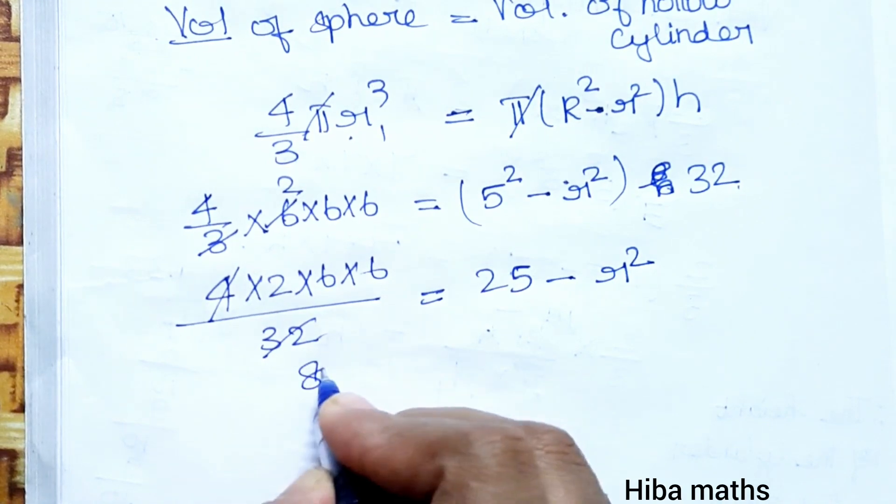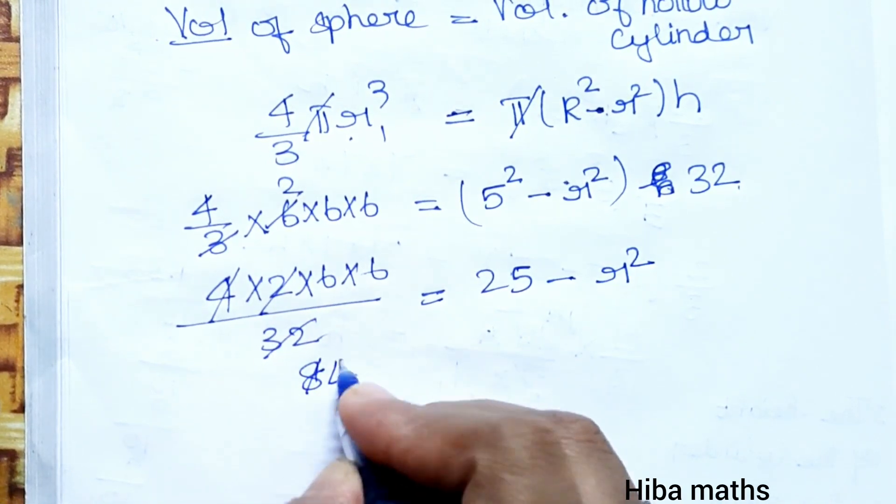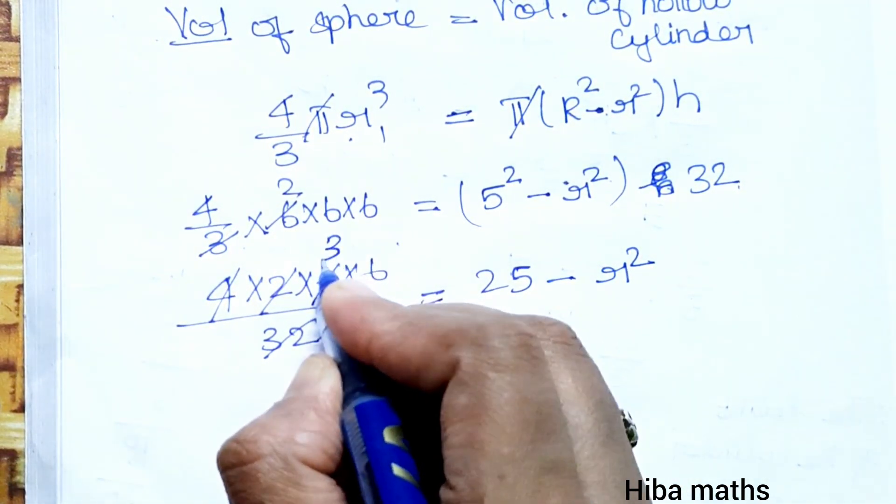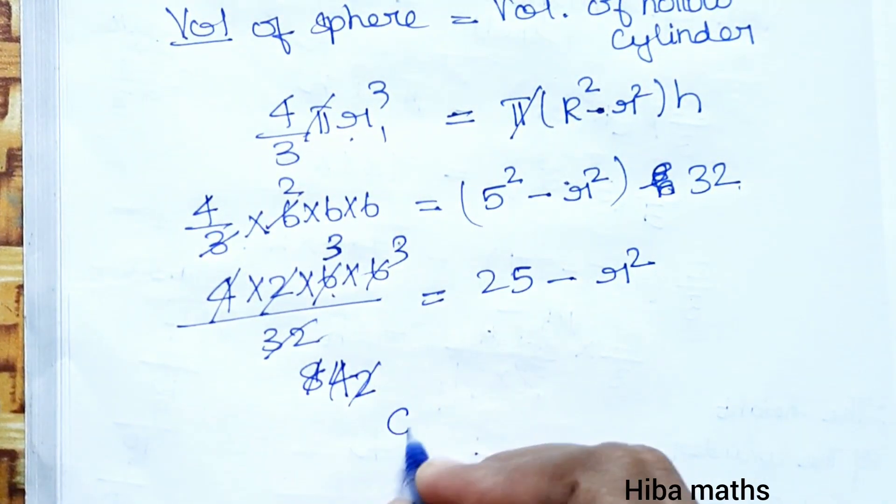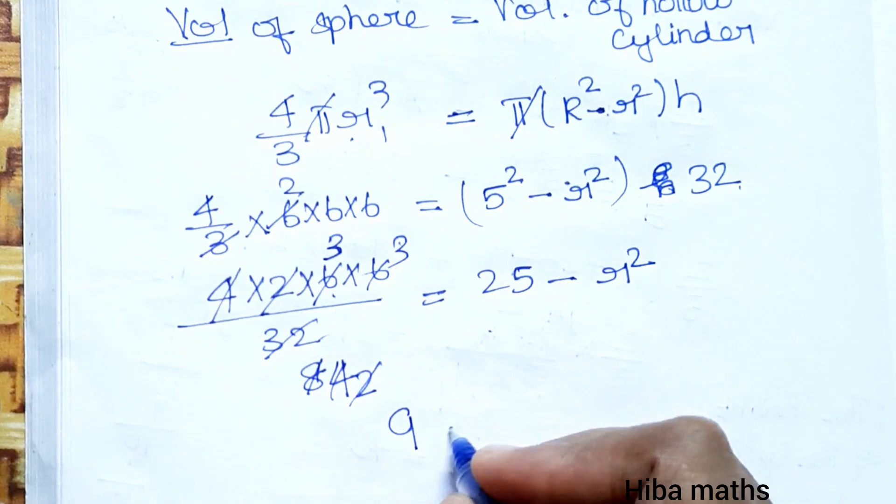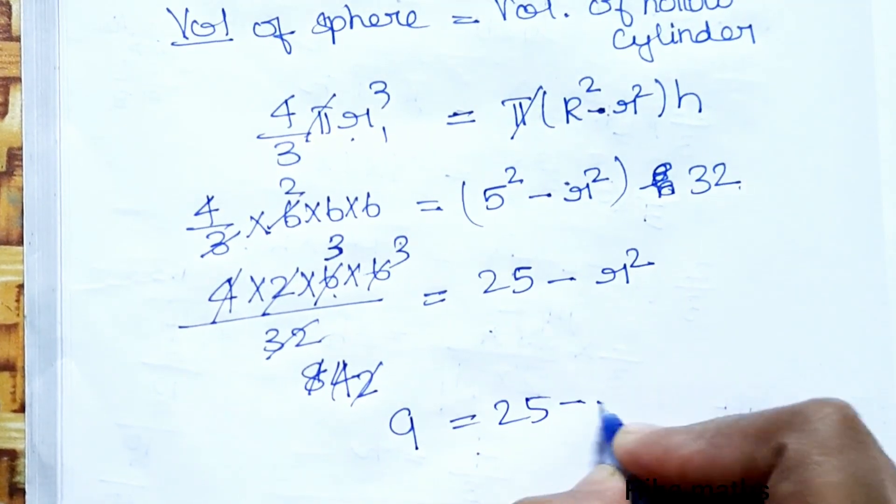4 × 8 = 32, then simplifying we get 9 equals 25 minus r².